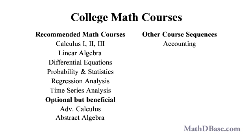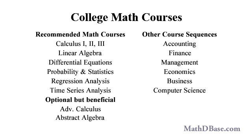Other course sequences that you will need are in accounting, finance, management, in addition to economics, business, and computer science. Since clear and concise written and verbal communication is essential in this field, one or two communications courses would not hurt. Many colleges and universities offer an actuarial science major, either through their math departments or jointly through their math and statistics department.